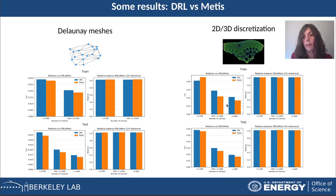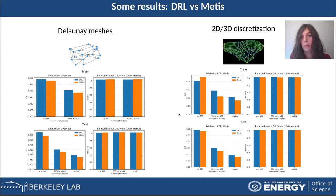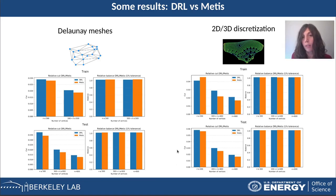Also, the cuts are very close to each other. As before, it seems there is a small difference, but one has to look at the scale of the cut. These are the results for the deep reinforcement learning agent.